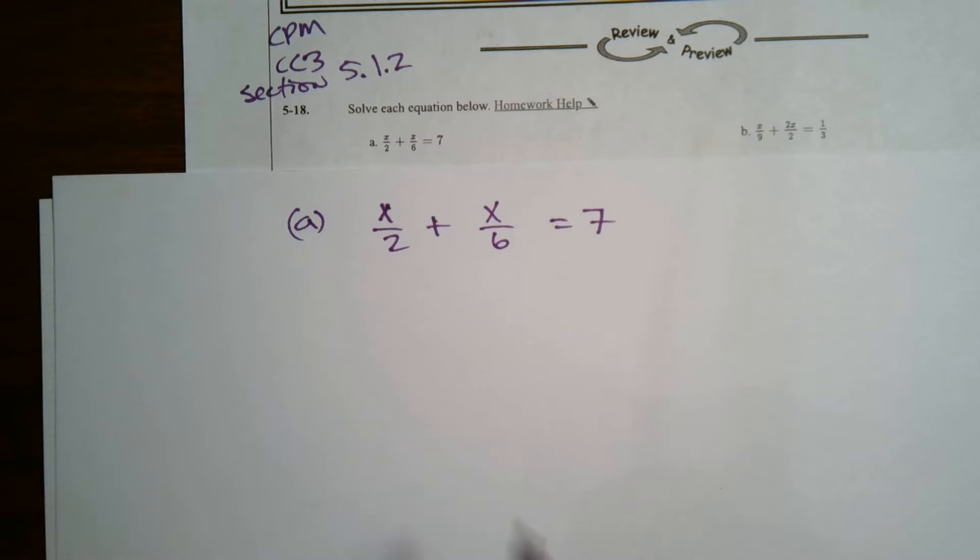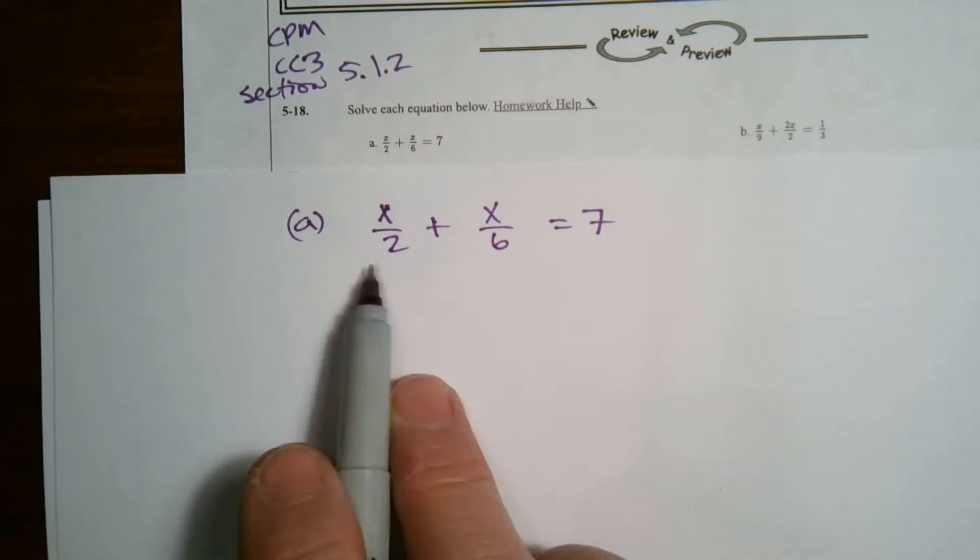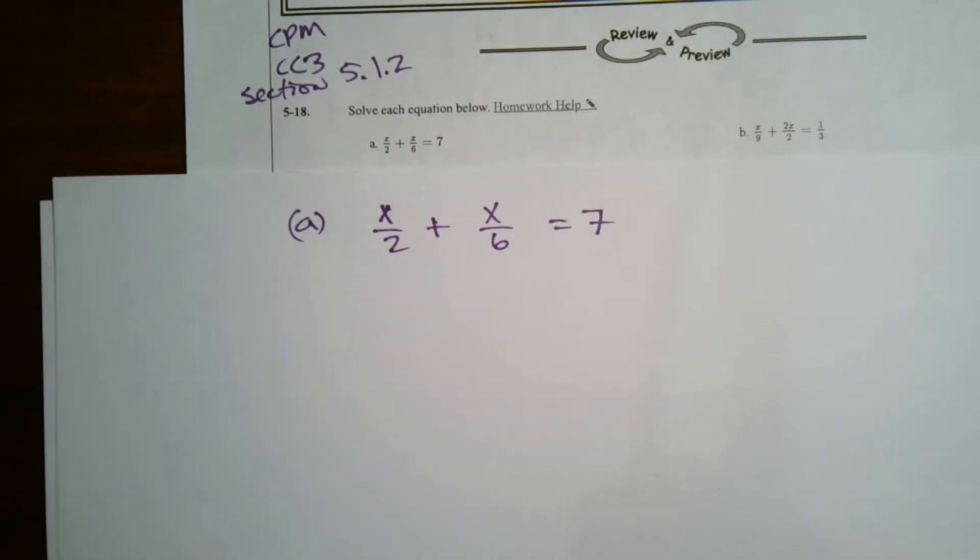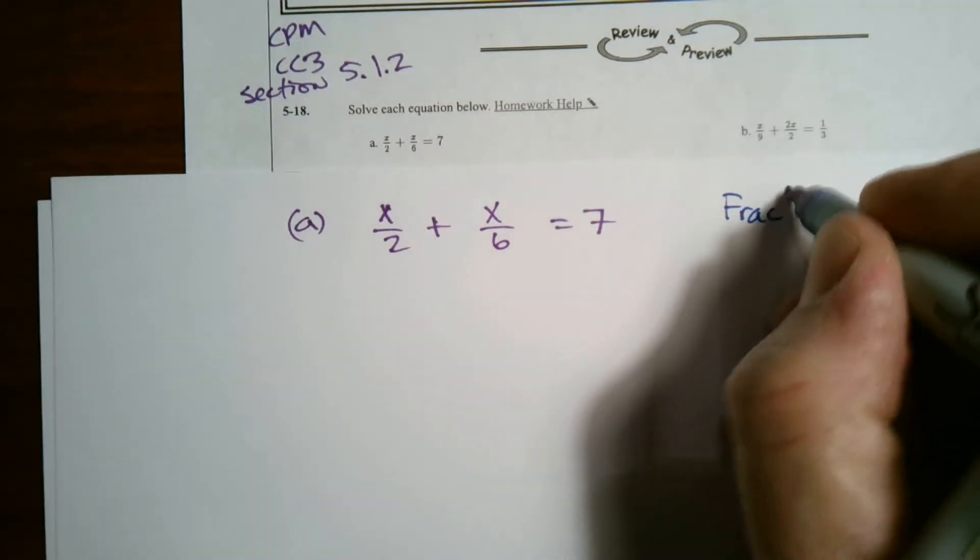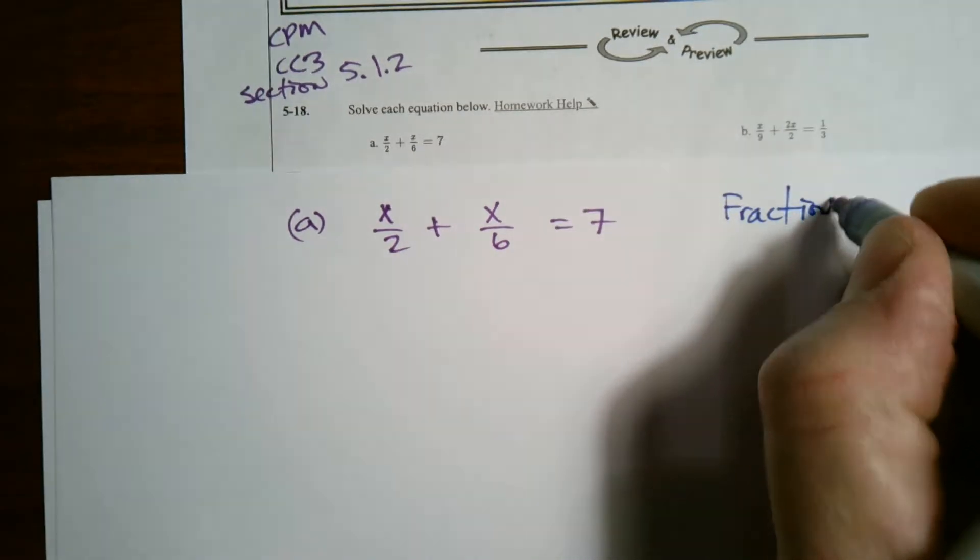I mean, I could get a common denominator and add those two fractions based on that, or I can look at this as an opportunity to get rid of the fractions and not have to deal with fractions. That's fraction busters. So I'll write that word fraction busters.